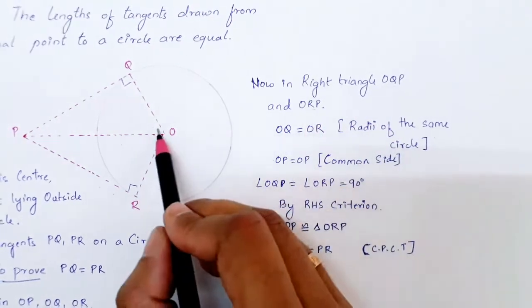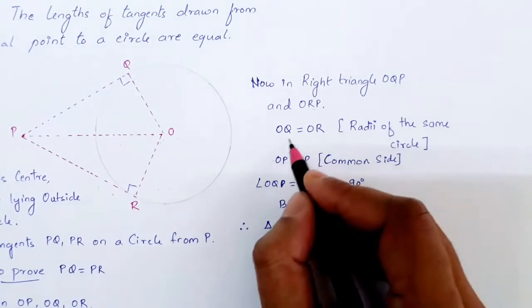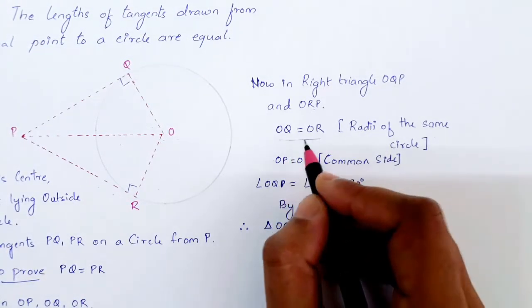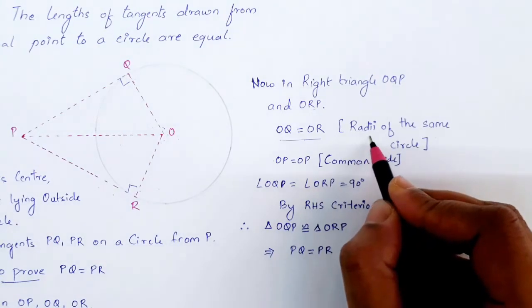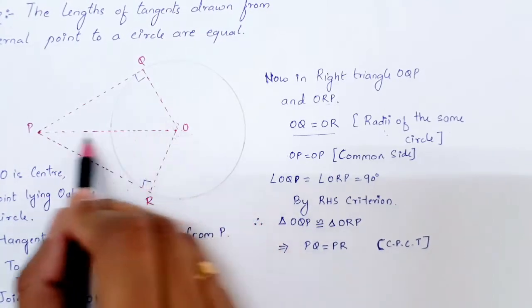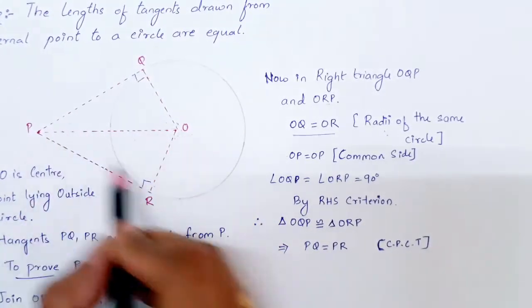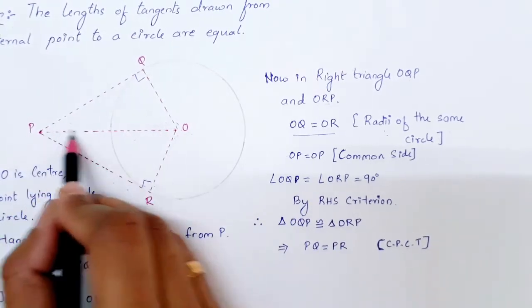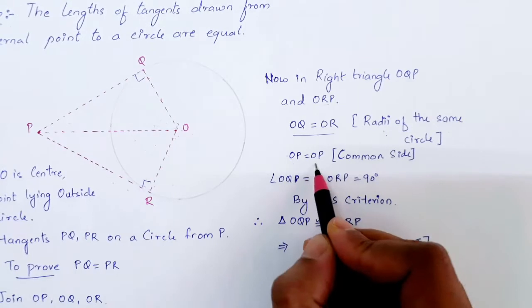In triangle OQP and ORP, OQ is equal to OR because OQ and OR are radii of the circle and they are the same. OP and OP are the same in both triangles, so OP becomes a common side for both triangles. Therefore OP is equal to OP, which is a common side.